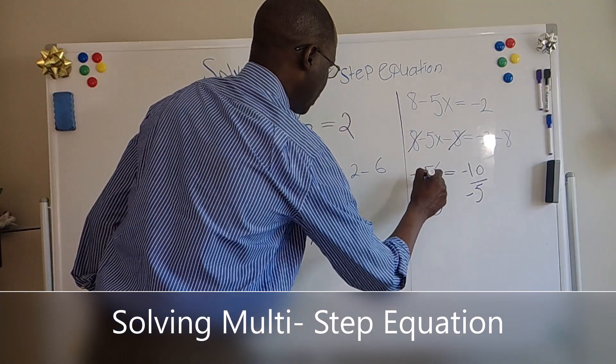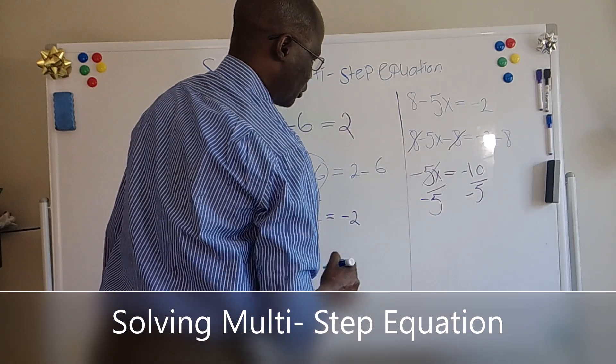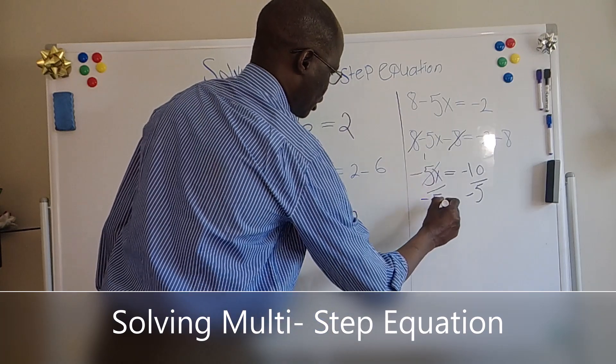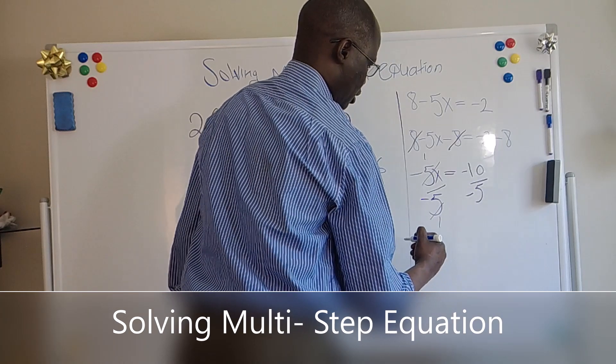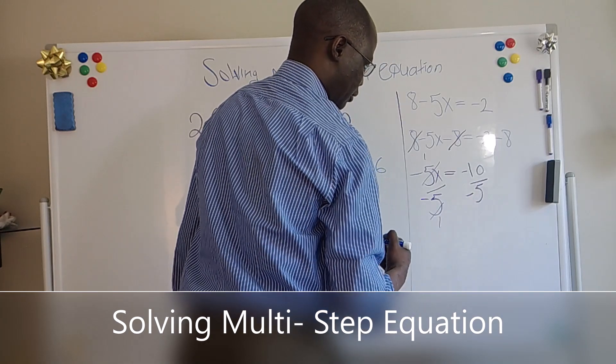So 5 divided by 5 is 1, the same thing here is 1. And minus 10 divided by minus 5, it becomes a positive.